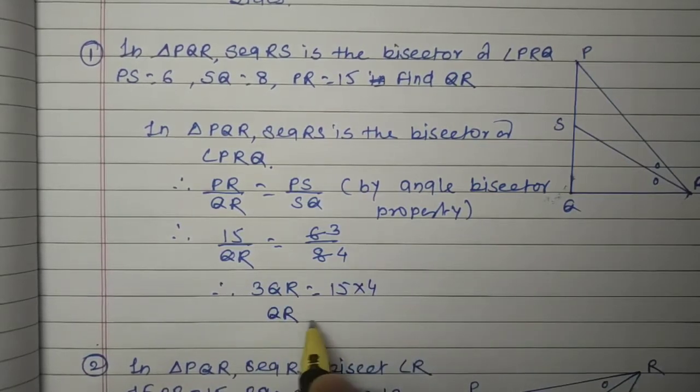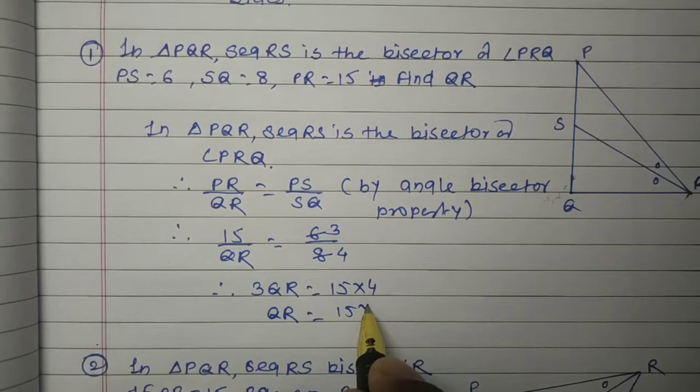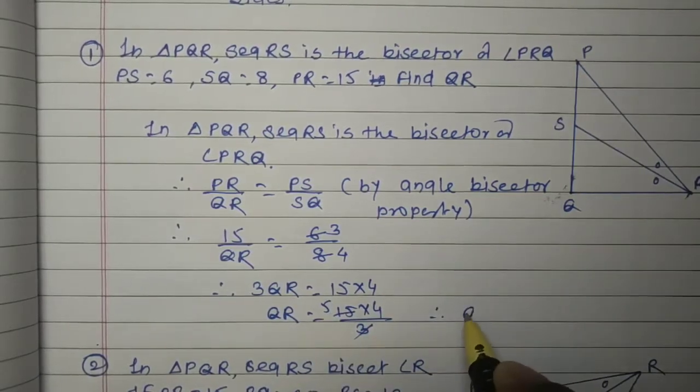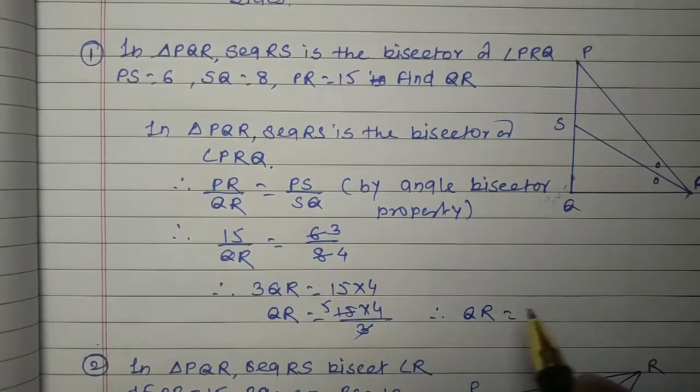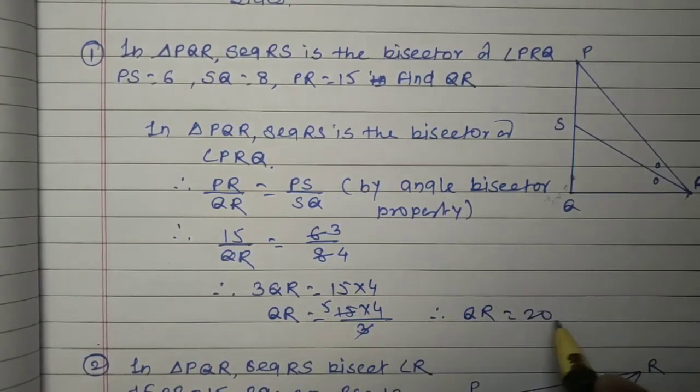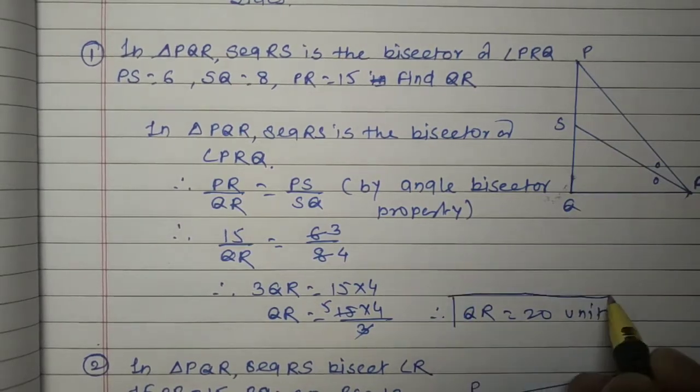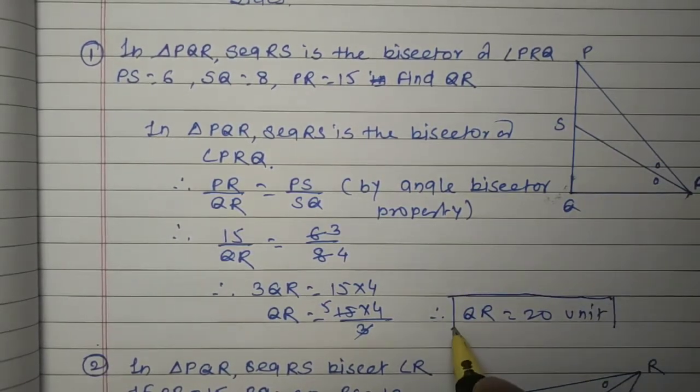Therefore, QR equals 15 into 4 divided by 3. 3 ones are 3, 3 fives are 15. And therefore, QR equals 20. QR equals 20 units. We write it as unit because the centimeter is not given, so we write QR equals 20 units.